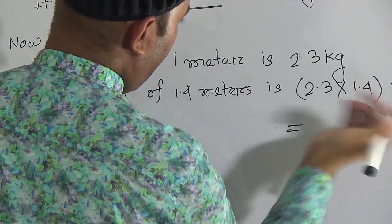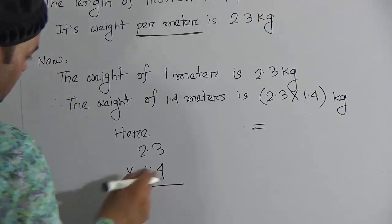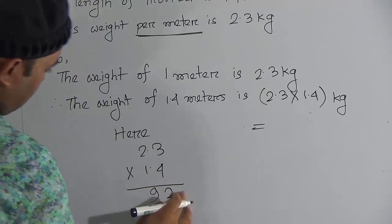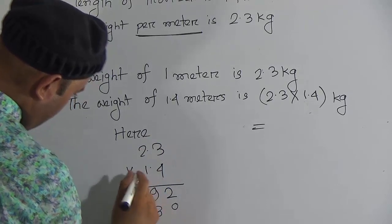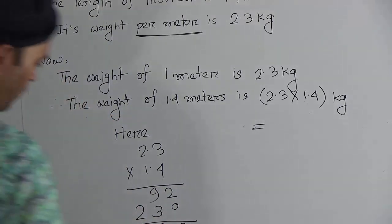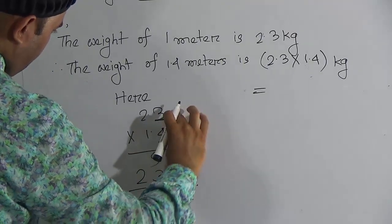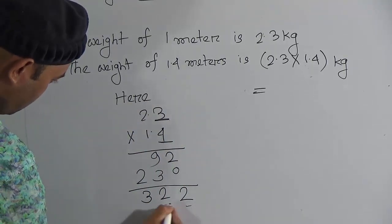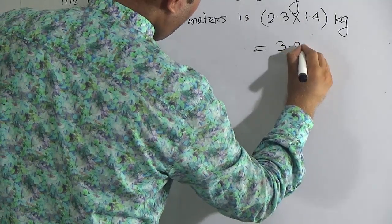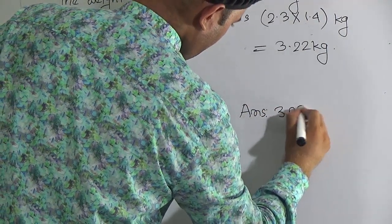We multiply 2.3 by 1.4. First row: 4 times 3 is 12, carry 1; 4 times 2 is 8 plus 1 is 9. Skip the ones place. Second row: 1 times 3 is 3; 1 times 2 is 2. Adding: 2, then 9 plus 3 is 12 carry 1, then 2 plus 1 is 3. After the decimal point there is 1 digit in each number, so 1 plus 1 equals 2 decimal places. Therefore 2.3 multiplied by 1.4 equals 3.22 kilograms. The answer is 3.22 kg.